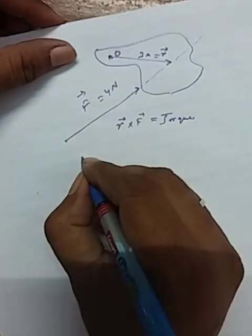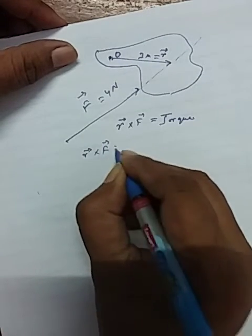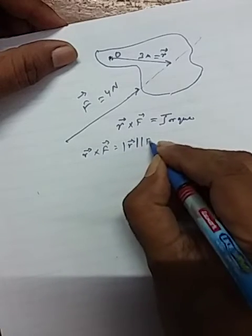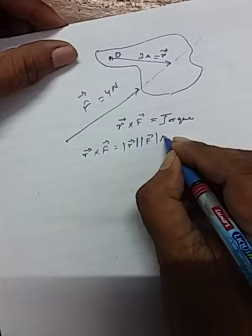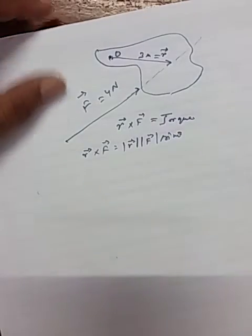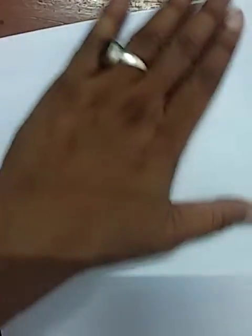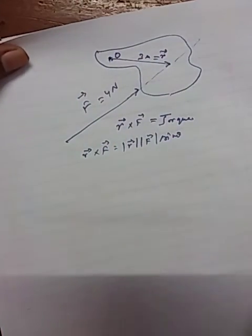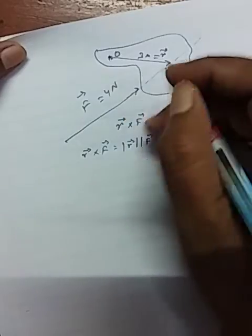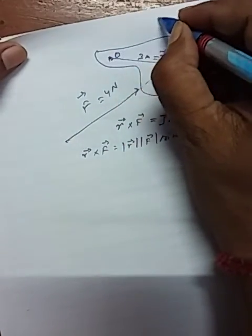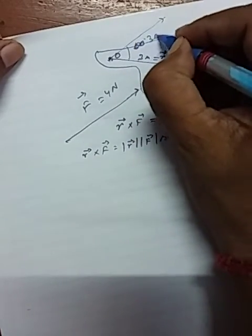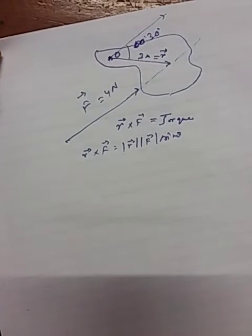So vector r cross f will be magnitude of r times magnitude of f times sine of the angle between the two vectors. Now my information is insufficient, so I need the angle between r and f. To get the angle, I have to shift f parallel here, and here I find that this is equal to 30 degrees.